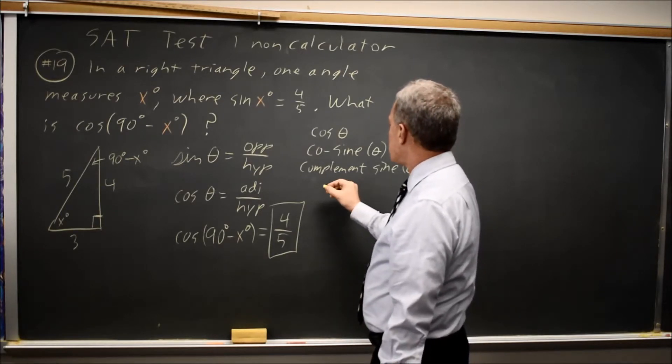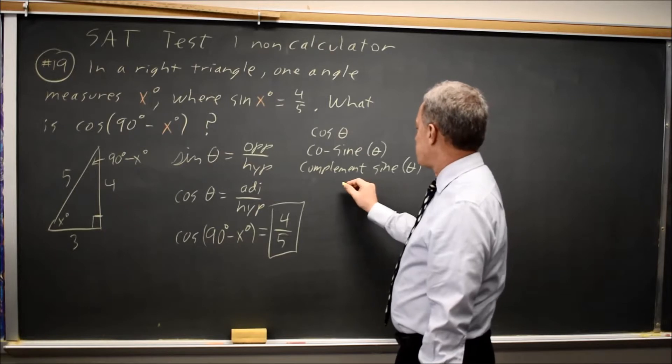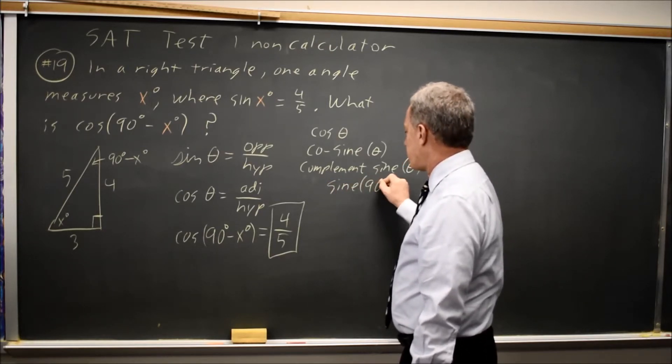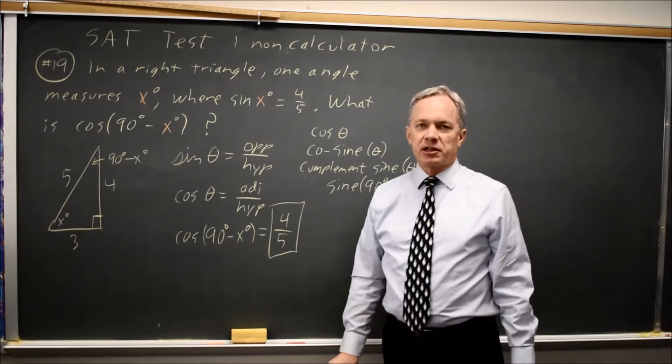So cosine literally means the complement's sine, and cos(theta) is the complement sine of theta, or the sine of the complement of theta, where the complement is 90 minus your angle theta.